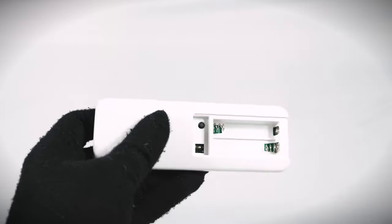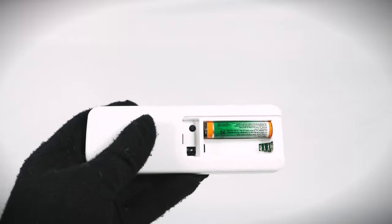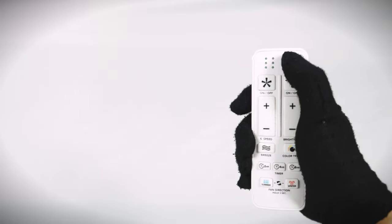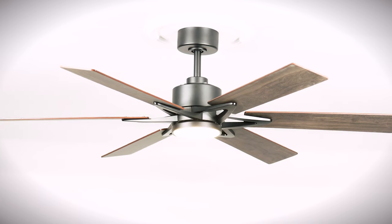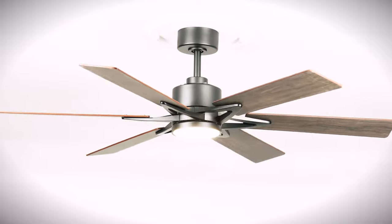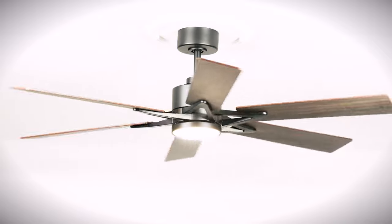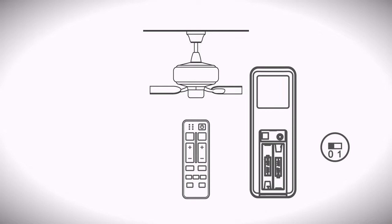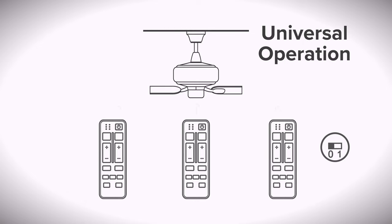On the remote, install the included batteries. Press the on-off button to begin using the fan. By default, the remote's dip switch is in the zero position and the fan is set to universal operation mode. It will accept commands from any remote in range.